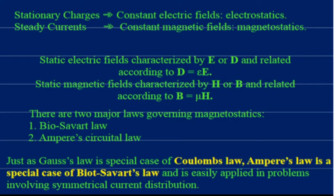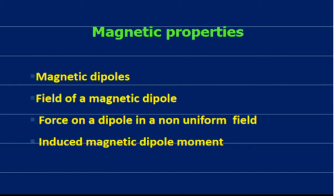Similarly, in static magnetic fields we have the relation B = μH, which we have already derived and used in derivations. The two major laws responsible for calculation of magnetic dipole moment and torque are the Biot-Savart law and Ampere's circuital law. On analogy, just as Gauss's law is a special case of Coulomb's law, Ampere's law is a special case of Biot-Savart law.